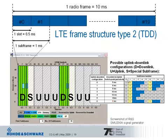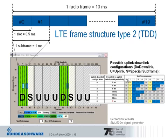This picture shows the LTE frame structure type 2 for TDD — time division duplex. The radio frame structure is the same: 10 milliseconds subdivided into 10 subframes of 1 millisecond each, with slots of 0.5 milliseconds. However, since it is TDD, uplink and downlink are separated in the time domain, and this must be reflected in the subframe structure.